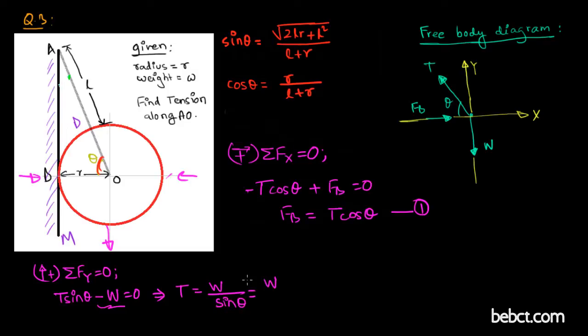This means T is equal to W divided by sine theta, which is equal to W multiplied by 1 over sine theta. It is equal to W multiplied by L plus R divided by square root of 2LR plus L squared. So I substituted the value of sine theta from earlier.